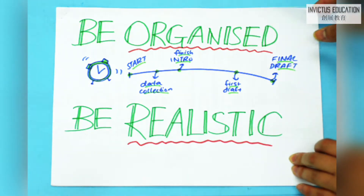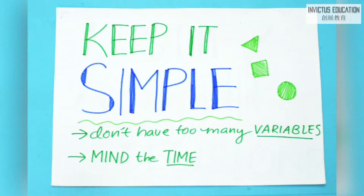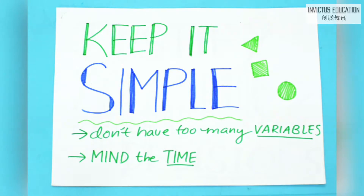Number 3: Keep it simple. Don't carry out extremely complicated experiments with lots of different variables. Also mind the time — how long will the experiments take, including waiting time and repeats? Does anything need time to grow?